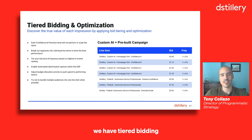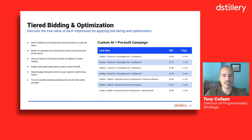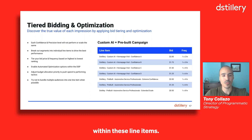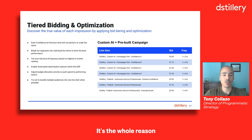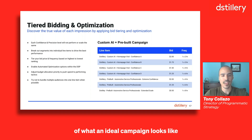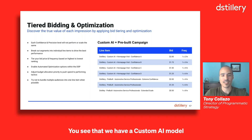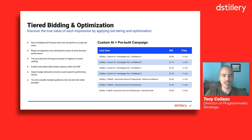Last but not least, we have tiered bidding and optimization. This strategy is key to the success of the previous strategies. The whole purpose is to discover the true value of each impression within these line items. We do that by applying different values to each audience — that's the whole purpose of breaking out audiences by line item and by precision level. On the right-hand side, I created an example of what an ideal campaign looks like when running both custom AI and pre-built together, with a custom AI model using A through D and pre-built segments with all three precision levels included.